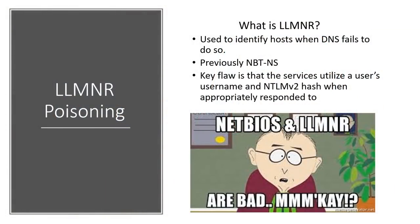Let's dive into our first attack, which is LLMNR slash NBTNS poisoning. LLMNR stands for Link-Local Multicast Name Resolution — basically it's used to identify hosts when DNS fails to do so. It was previously known as NBTNS, and still to this day, if LLMNR fails, NBTNS kicks in. A key flaw of LLMNR is that the service utilizes a user's username and their NTLMv2 hash when appropriately responded to. We're going to use a tool called Responder to respond to these requests.